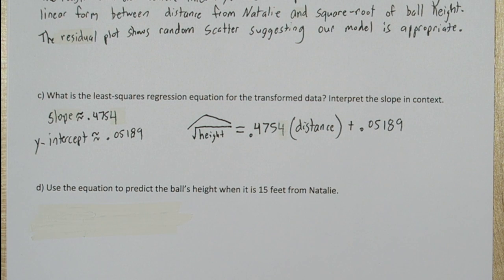Now this equation actually predicts the square root of our height. So our equation is, our predicted square root of height equals 0.4754 times the distance plus 0.05189.